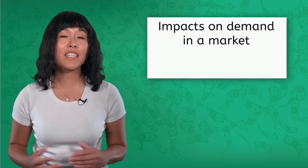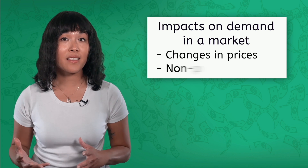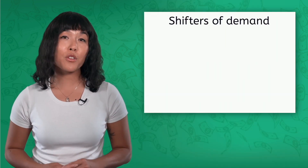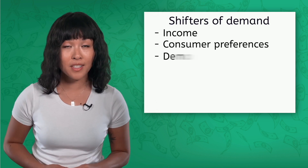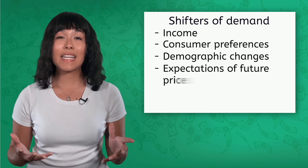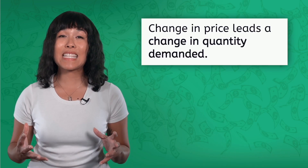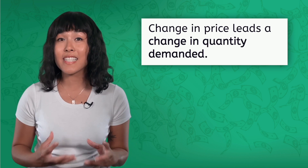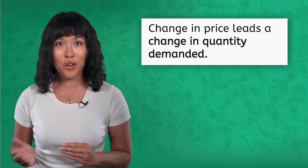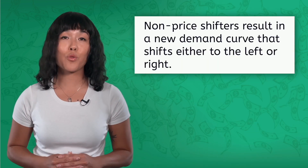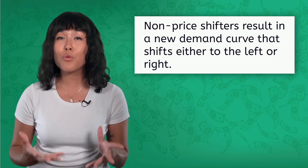Let's take a few minutes to recap what we've learned today. There are two ways that demand can be impacted in the market: changes in prices and non-price factors. These non-price shifters of demand include changes in income, changes in customer preferences, demographic changes, expectations of future prices, and changes in prices of related goods or services. When demand is impacted by changes in price, this creates a change in quantity demanded and is represented by movement along the demand curve. Non-price shifters create changes in demand at all prices and result in a new demand curve that shifts either to the left or right. Tomorrow we're going to examine the supply side of things. Keep investing in yourself one lesson at a time.